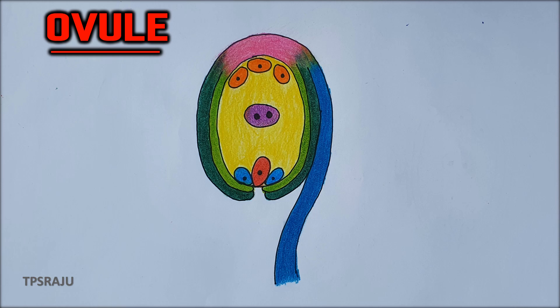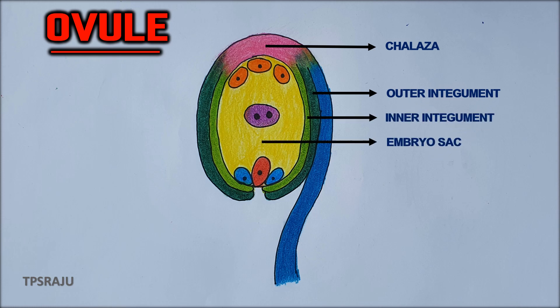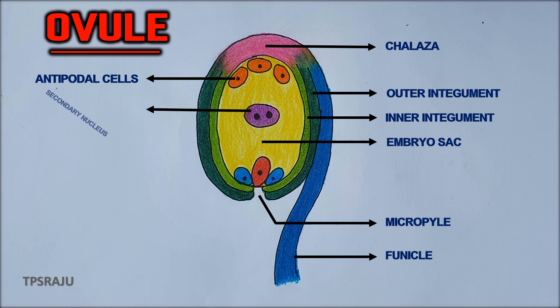Finally, let's label the parts: outer integument, inner integument, embryo sac, micropyle, funicle, antipodal cells, secondary nucleus, egg, and synergids.